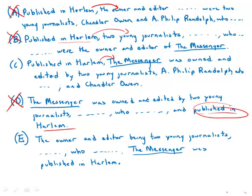In E, we have the owner and editor described as 'two young journalists' using the word 'being' — this is a very awkward and unclear phrase. Whenever you see 'being,' a flag should go up in your mind, as it is rarely correct on sentence correction. It makes the whole sentence somewhat awkward. So even though 'the messenger was published in Harlem' is joined well, the problem is the awkward phrase at the beginning. So E is out.